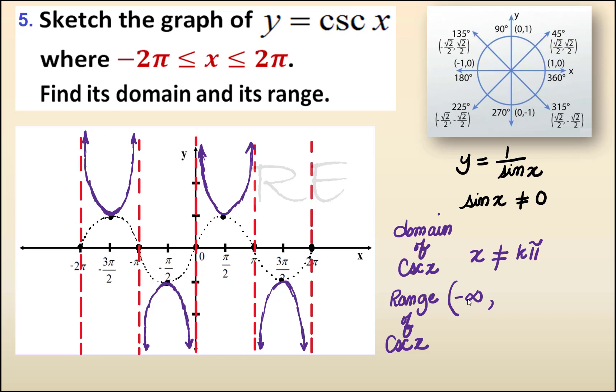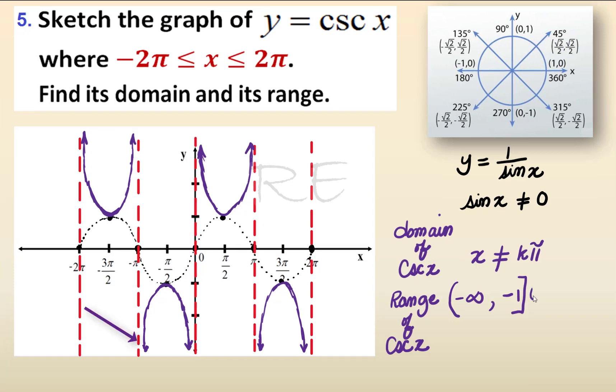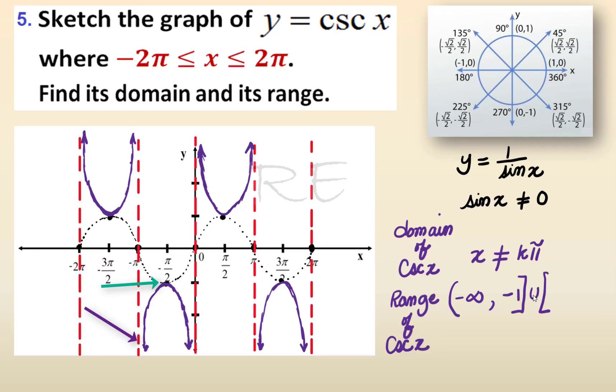For the range, if we look from negative infinity to 0, it goes from negative infinity to negative 1. Then, if we look at the interval from 0 to π, it goes from 1 to positive infinity.